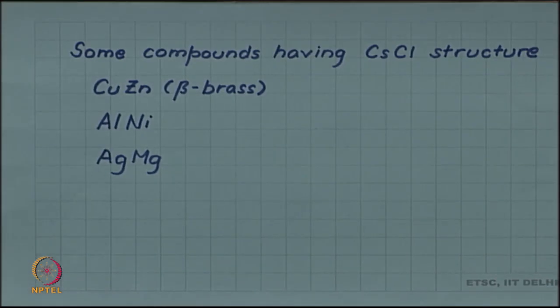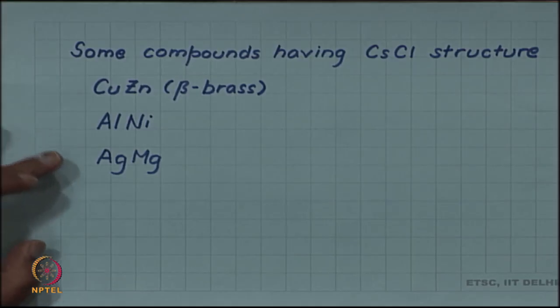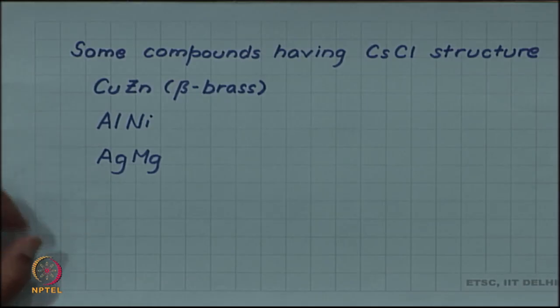Some examples of compounds with this structure include intermetallic compounds: copper zinc (beta brass), aluminum nickel, and silver magnesium all form the caesium chloride structure.